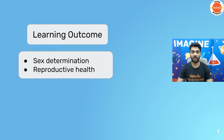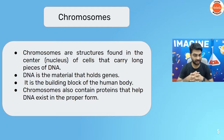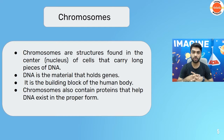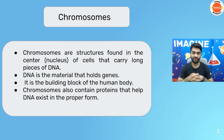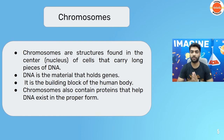So let's begin. We are talking about adolescence — we will be talking about sex determination and the reproductive health. In the nucleus of a cell, you find the chromosomes. These chromosomes are found in every cell of your body. In total, there are 46 chromosomes in every cell of the human body.